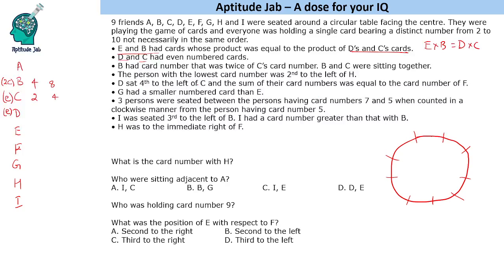D is seated 4th to the left of C, and the sum of their card numbers equals F's card number, so D + C = F. G had a smaller card than E, so G < E. Also, I had a card number greater than B, so I > B. These are all the numerical conditions given.